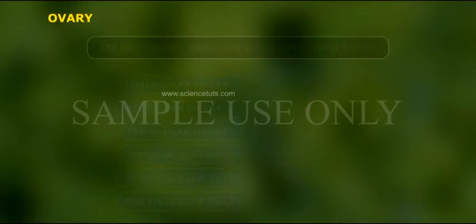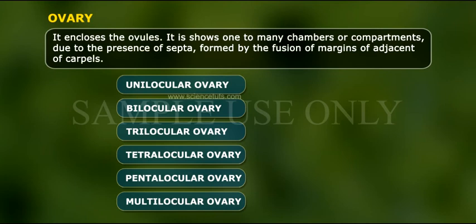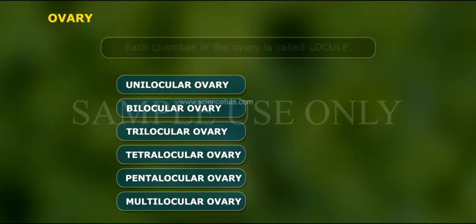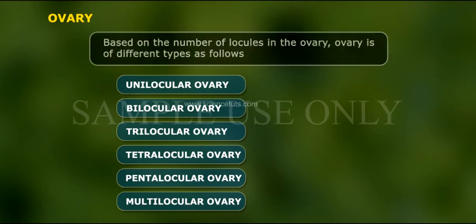Ovary. The basal swollen part of the gynoecium is called the ovary. It encloses the ovules and shows one to many chambers or compartments, due to the presence of septa formed by the fusion of margins of adjacent carpels. Each chamber in the ovary is called a locule.